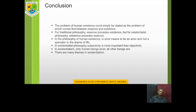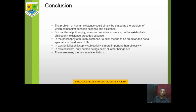To summarize: the problem of human existence is the problem between essence and existence — which one comes first. For traditional philosophy, essence precedes existence. But for existentialist philosophy, existence precedes essence. In the philosophy of human existence, to exist means to be an actor in the drama of life, not a spectator. In existentialist philosophy, subjectivity is more important than objectivity, and only human beings exist — all other beings simply are. There are many themes in existentialism as we have already identified. Thank you for listening, and I hope you got something out of this lecture.